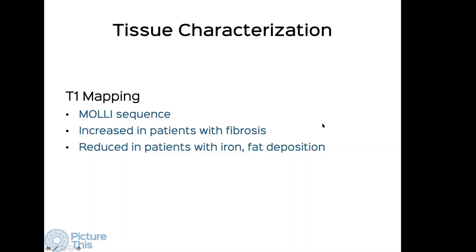For suboptimal images due to inability to breath-hold or tachyarrhythmias, troubleshooting includes using real-time imaging and changing parameters for faster acquisition. For differentiating infiltrative disease from LV mass: this patient had nodular disease suggesting tumor, so we requested PET-CT — we've had lymphomas presenting like amyloid. Invariably there is something else to guide us — nodularity, lung disease, lymphadenopathy. You have to look at the total picture, not just the MR itself.